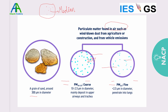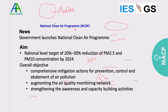PM 10 can reach our airways and lungs and get deposited there, causing respiratory illnesses like asthma and bronchitis. PM 2.5 is more dangerous because it can penetrate lung tissues and enter the bloodstream, reaching different organs. These are particularly toxic if they contain heavy metals like mercury or cadmium, causing cancer and mutations. They are mainly dust blown by wind from agriculture, road construction, and also from vehicle emissions.